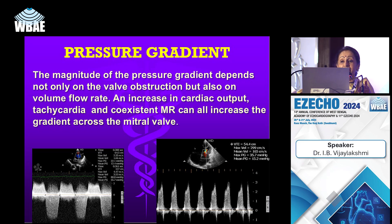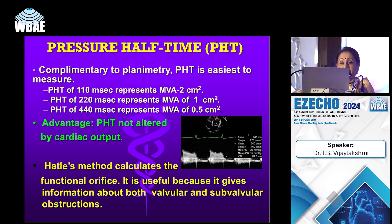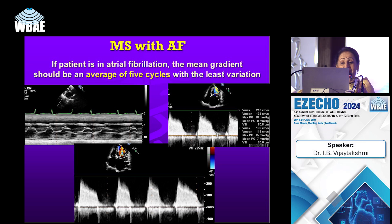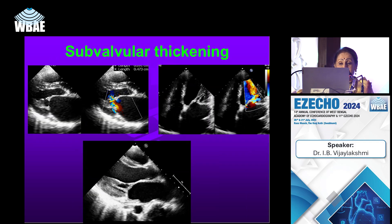The trans-mitral gradient is determined by continuous wave Doppler mitral inflow during diastole, derived from the trans-mitral velocity flow curve using the simplified Bernoulli equation. However, the magnitude of the pressure gradient depends not only on valve obstruction but also on flow and volume rate. Increased cardiac output, tachycardia, and coexisting MR can all overestimate mitral stenosis severity.